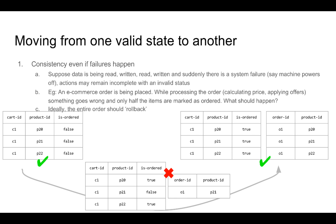First, let us try to understand how failures can cause invalid states to exist in our database. Suppose we are reading data and writing data to a database and suddenly there is a system failure, which could be a power failure, a disk failure, or a software failure, and this causes our database to be in an invalid state.